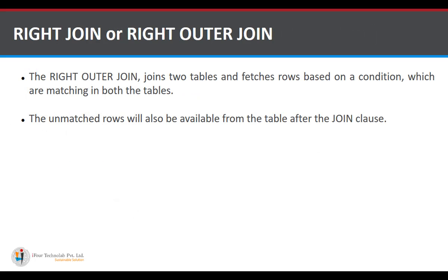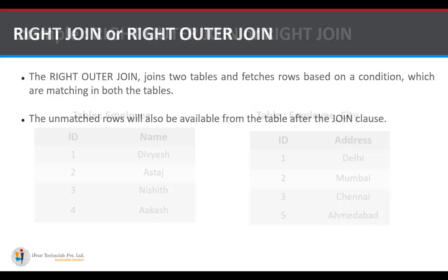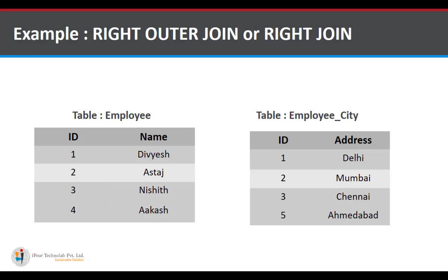The next is right join. A right join joins the tables and fetches rows based on the condition which are matching in both tables. The unmatched rows will also be available from the table after the join clause — unlike the left join where unmatched rows come from the table before the join clause. We again use the employee and employee_city tables.